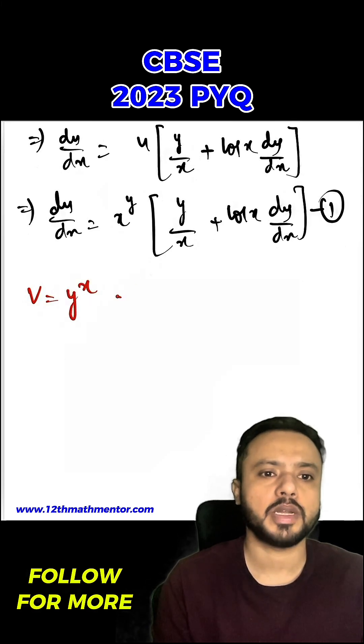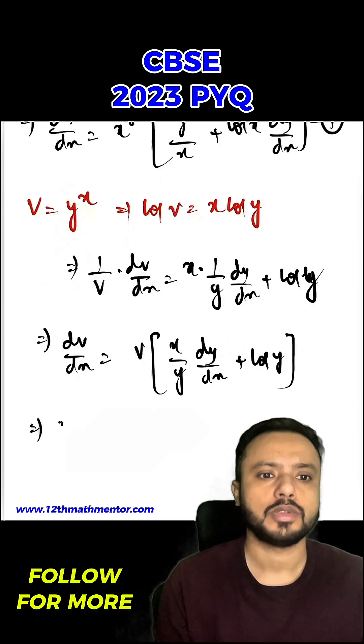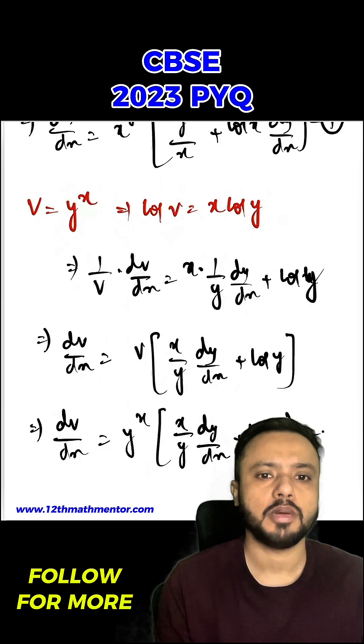Similarly, v is y raised to the power x so I can say log v equals to x log y. So again, I will differentiate both sides with respect to x. 1 upon v into dv upon dx equals to x into 1 upon y dy upon dx plus log y. So dv upon dx value we are getting y raised to the power x, x upon y dy upon dx plus log y. This is our second equation.